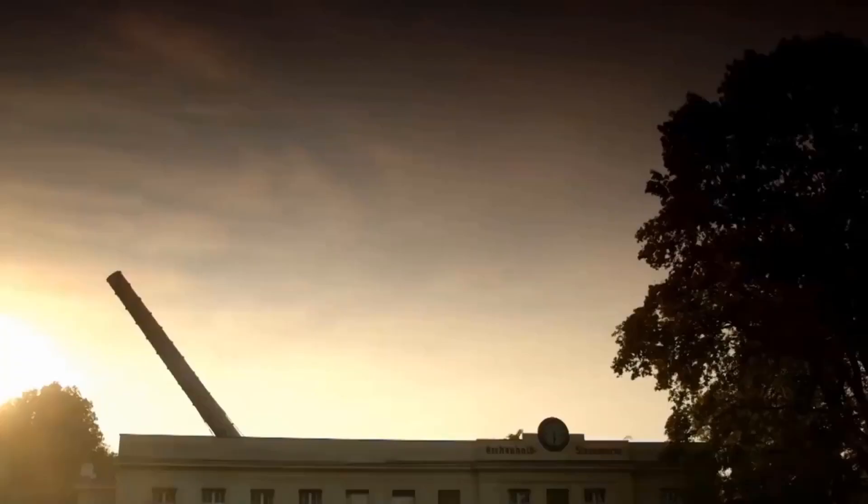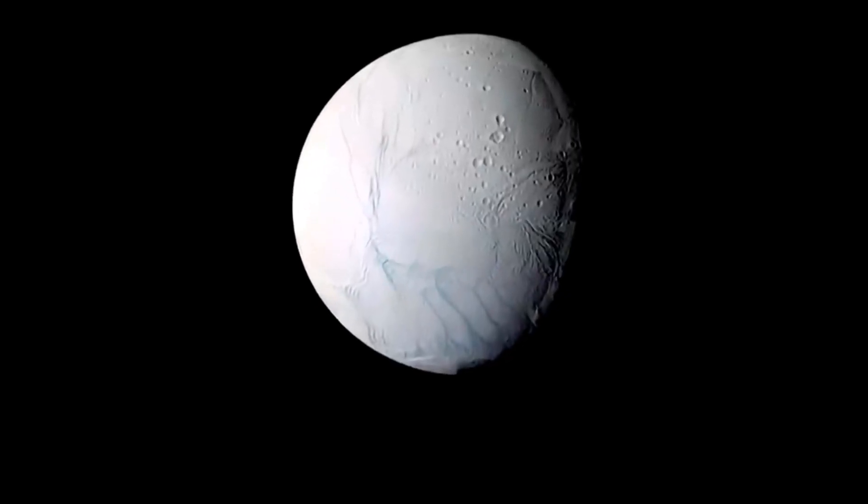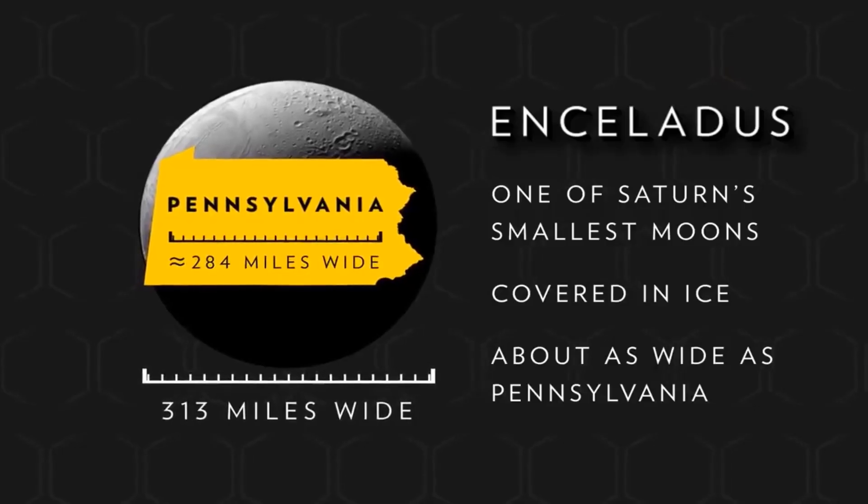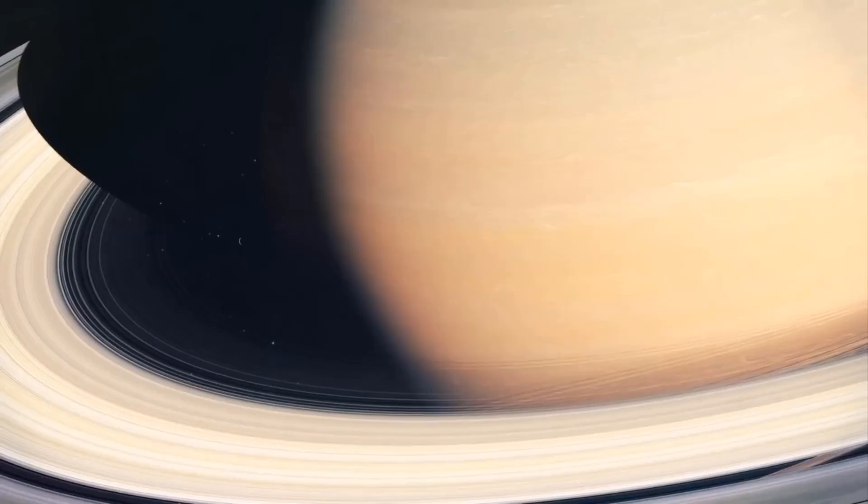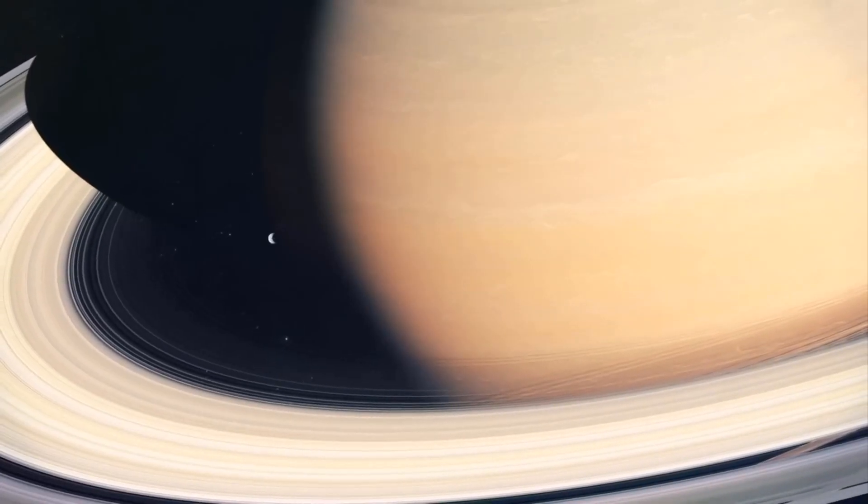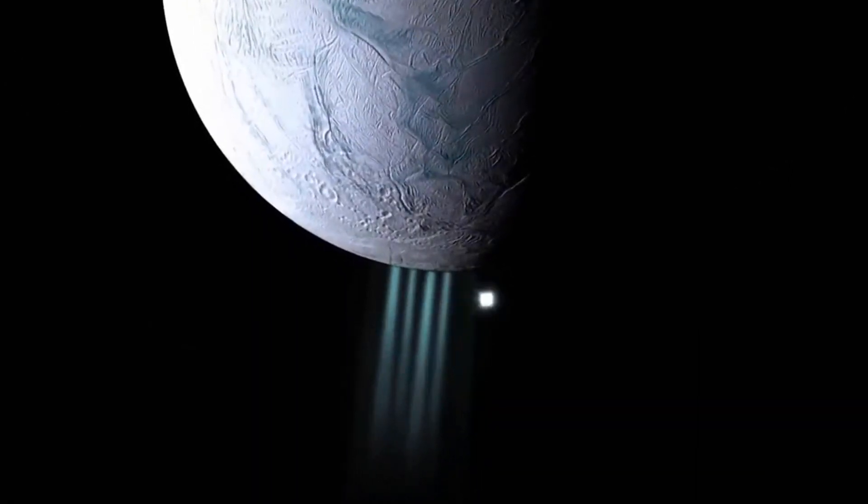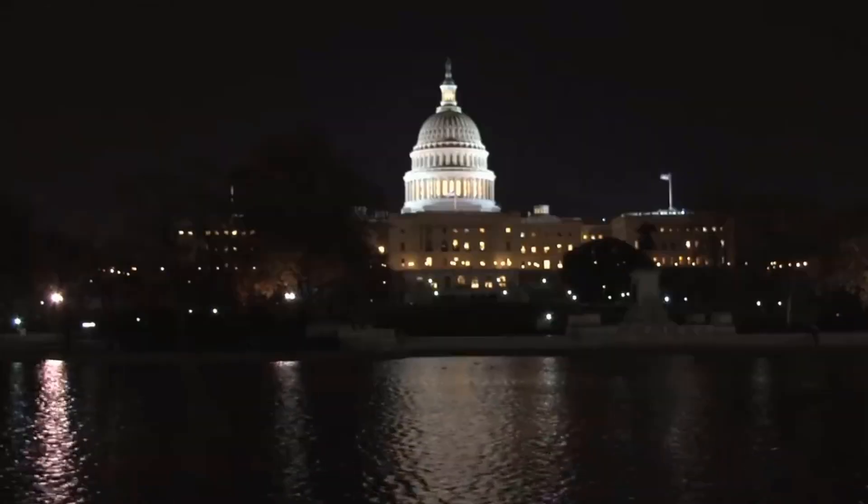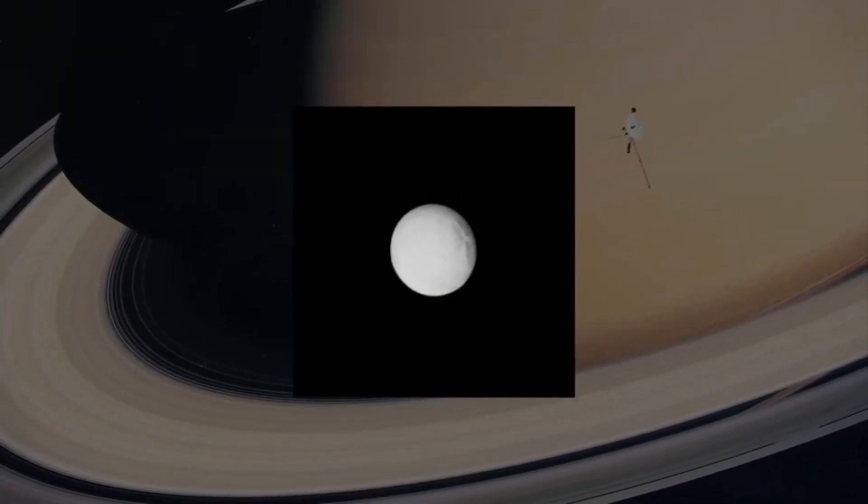One way scientists can tell their ages is by looking at how closely the moons orbit the planet. A gravitational tug-of-war between planets and their satellites pushes the orbits of the satellites outward into space slowly over very long periods. For example, our moon is drifting away from Earth each year at about the rate that fingernails grow. The recent study suggests that if Saturn's moons were as old as the solar system, ones that are close to the rings would have drifted much farther away by now.